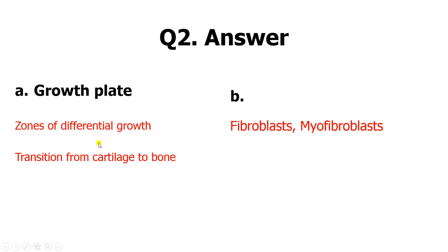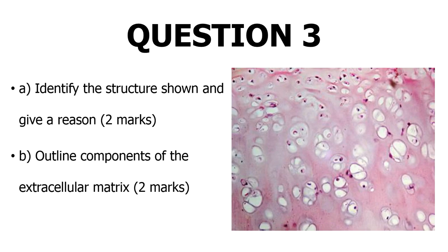The resident cell types in the dermis of skin are fibroblasts and myofibroblasts. Remember, the dermis of skin is connective tissue — specifically dense irregular connective tissue — and the resident cells of dense connective tissue are fibroblasts and myofibroblasts. Now for the next picture, you are asked to identify the structure and give a reason, then give the components of the extracellular matrix.